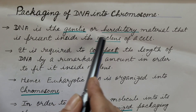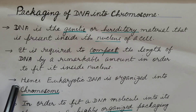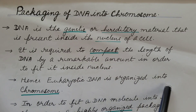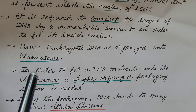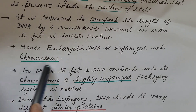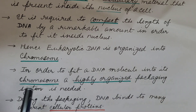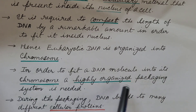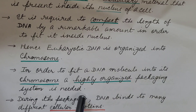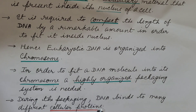There is a need to compact DNA so that it can fit in the nucleus. Eukaryotic DNA is organized into chromosomes, and DNA is present in the nucleus in the form of chromosome. In order to fit a DNA molecule into its chromosome, a highly organized packaging system is needed. Here, we are going to discuss about this packaging of DNA into chromosome.